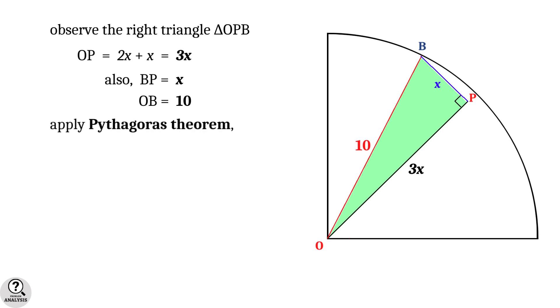Now apply the Pythagoras theorem. We get BP squared plus OP squared equals OB squared. That is, x squared plus 3x squared equals 10 squared. This gives us 10x squared equals 100, and therefore x squared equals 10.